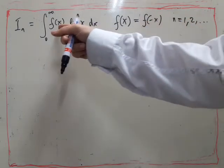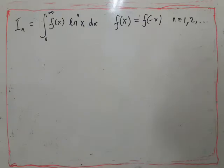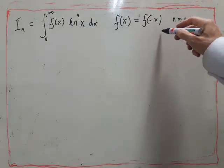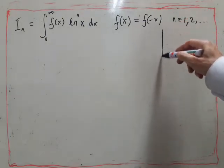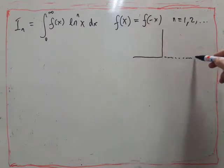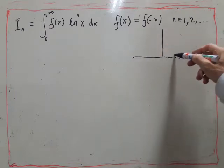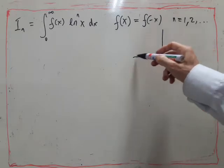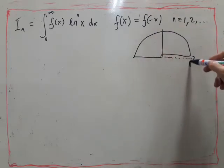This again is of course assuming that there's no poles on the real axis. So the contour we want is this. We've got a branch cut on the positive real axis. Looks like this.